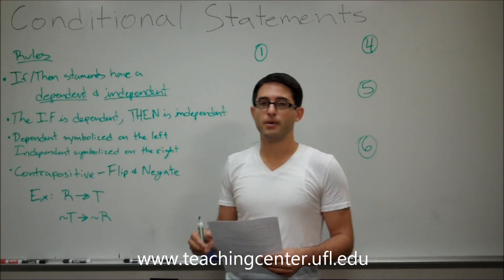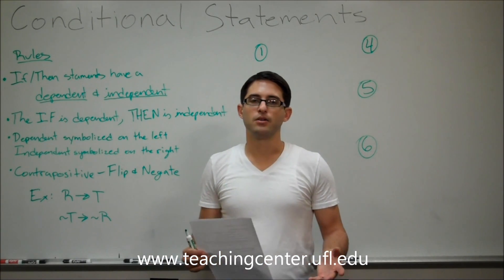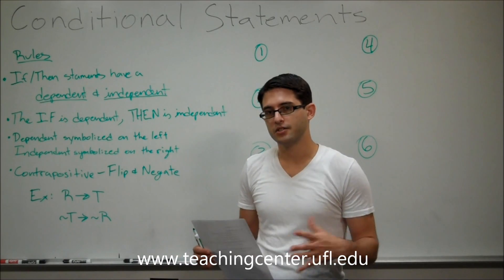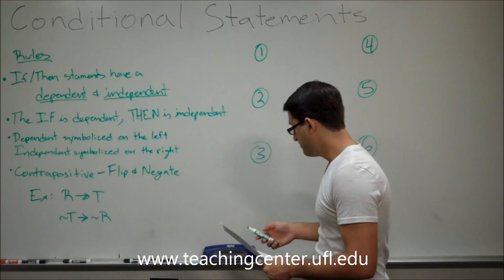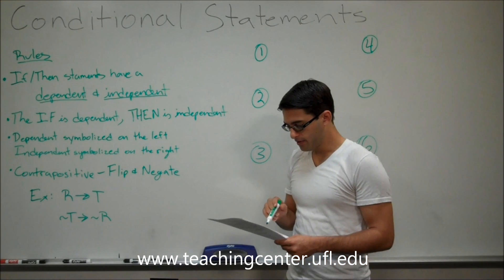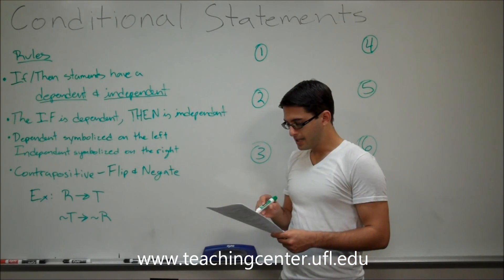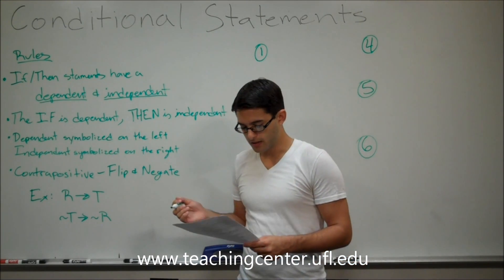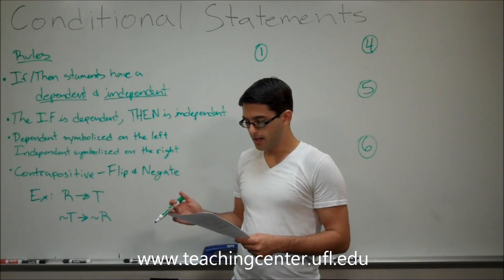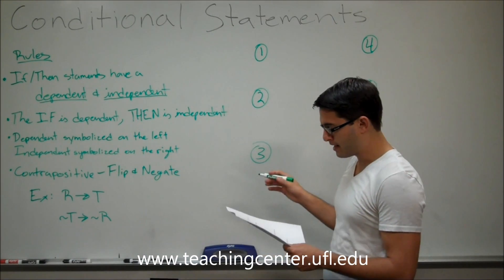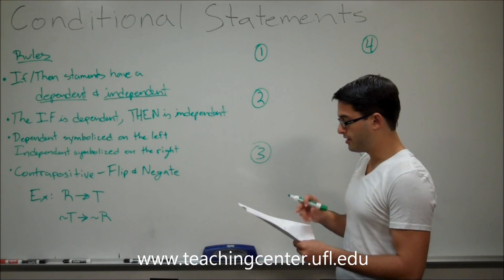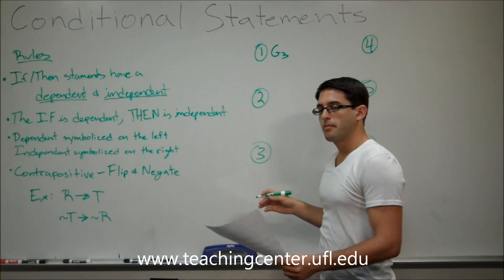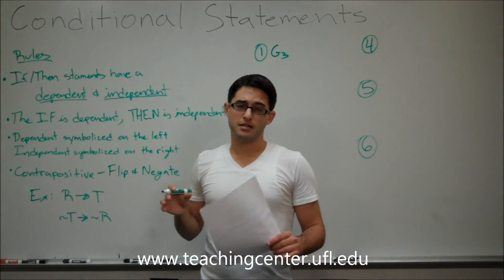We're going to go over some practice problems. You have a PDF under this video — you can download it or print it and go along while we do it, or you can try to do it yourself and then check your answers. The first problem reads: if Gerald finishes third, then Jasmine finishes first. This is a traditional if-then statement. The if is always going to be on the left-hand side of the arrow — in this case, if Gerald finishes third. We're going to symbolize that as G3. Remember, you always want to symbolize as simply as possible.